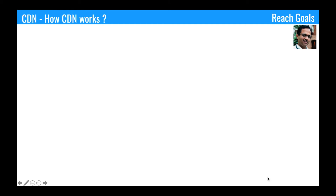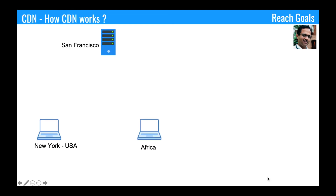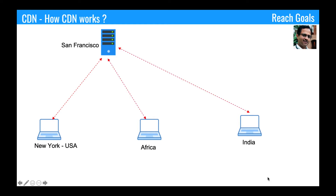Now let's see how CDN works. If you don't have a CDN server, all your content will be in the origin server — for example, it may be in the San Francisco server. All clients accessing from Newark, Africa, or India have to hit the San Francisco server to get the content. In this case, there is no CDN installed in between.